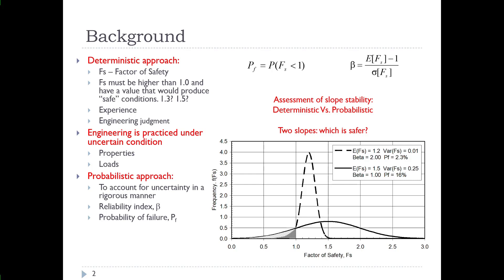However, this approach has certain drawbacks in that we really don't have a clear understanding of what risk we are exposed to when we have a factor of safety of 1.3 or 1.5. The example is shown in the figure here of two different scenarios where we have variation accounted for and therefore we have a bell distribution of the factor of safety.